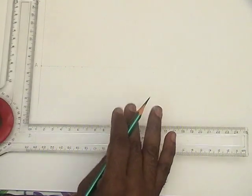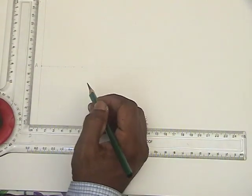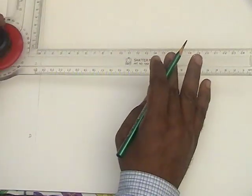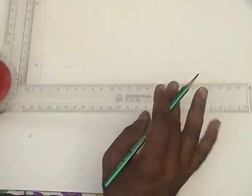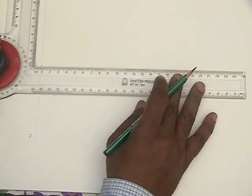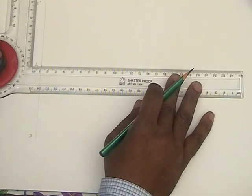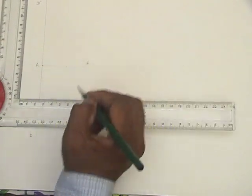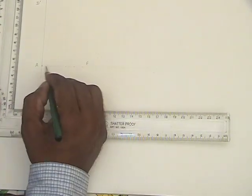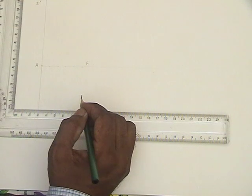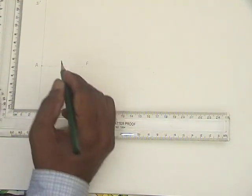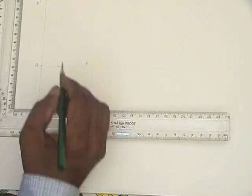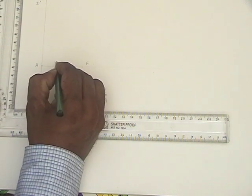We construct the hyperbola. The distance from the directrix to the focus is given as 50mm. So draw the directrix and draw the axis line. Then from the directrix, you take 50mm, locate the focus point. Divide this AF into 5 equal parts. Given the eccentricity is 2 by 3, from the focus point you go 3 steps ahead and mark here the vertex point.